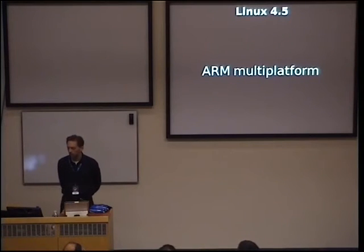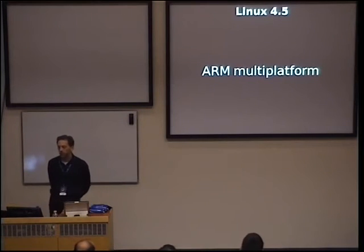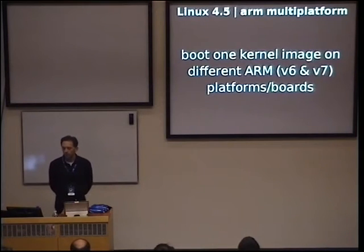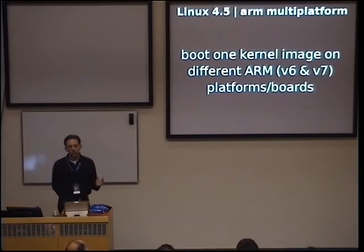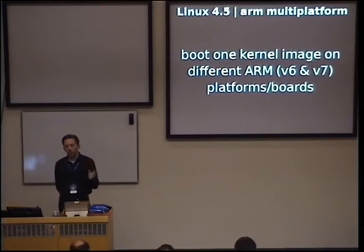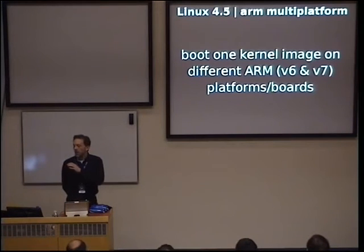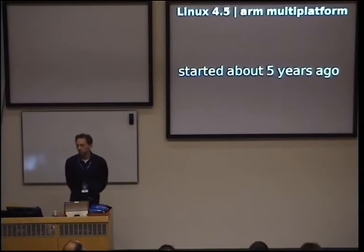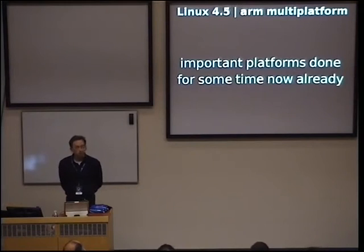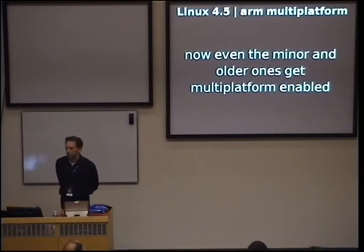For embedded developers, the ARM multi-platform support gets mostly finished in 4.5. This feature allows what's normal in the x86 world — compile one kernel image and boot it on many different systems — which wasn't possible in the ARM world before. Thanks to multi-platform efforts, you can compile your kernel for Raspberry Pi, Banana Pi, and other platforms and really use that kernel everywhere. This effort took about five years; all important platforms were converted earlier, and now with 4.5 even minor and older platforms get multi-platform enabled.